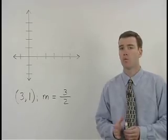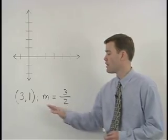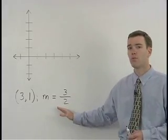In this problem, we're asked to graph the line that contains the point (3,1) and has a slope of 3 halves.